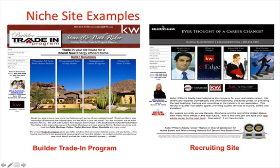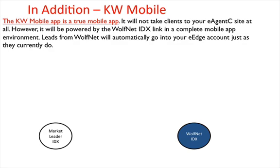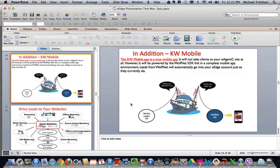You definitely want to go in and make sure that you get Wolfnet activated. Even if you decide you don't want to do your eAgency site — which you should, because you've already been paying for it, it's $25 a month for all of these tools — you might as well use them. But even if you decide not to do your eAgency, you need to go ahead and get Wolfnet powered up. The reason why is Wolfnet is going to manage the mobile app. The mobile app will tie directly into Wolfnet. All you have to do is make sure that you have your Wolfnet IDX link active. As long as you have Wolfnet in your MLS area, it's going to tie right into the mobile device, and you're going to be able to share that with your clients and generate more leads.